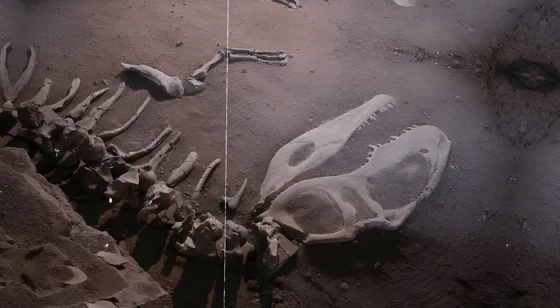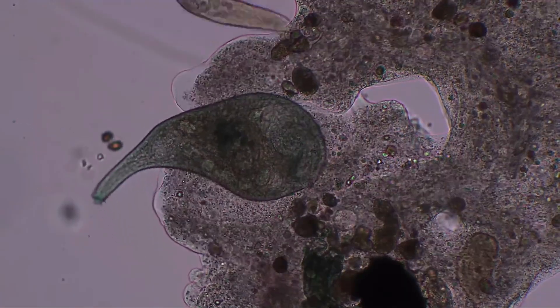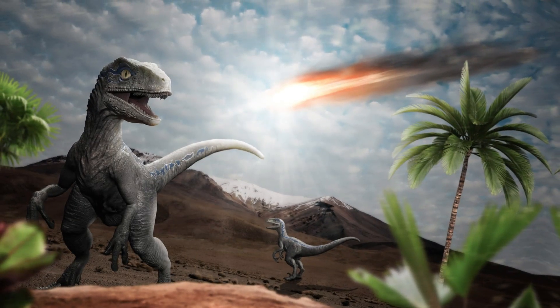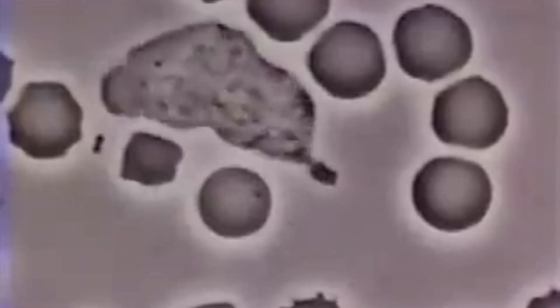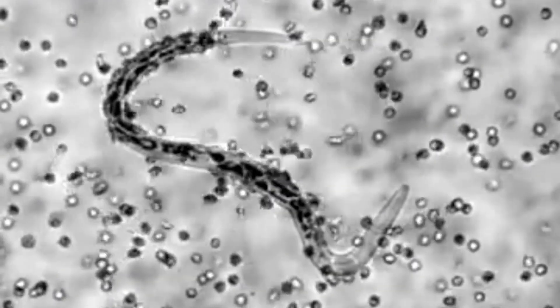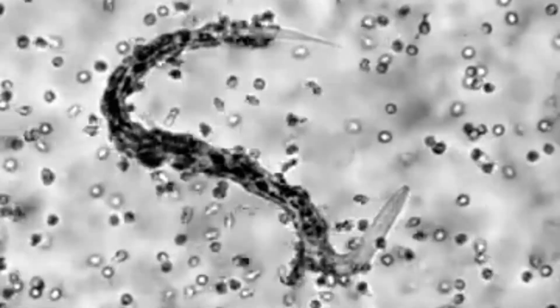While 75% of species died, parasites evolved faster than extinction could kill them. Mass extinction ended life for millions of species, but for parasites, it cleared the board. And with a fresh start, they began building something even more terrifying.